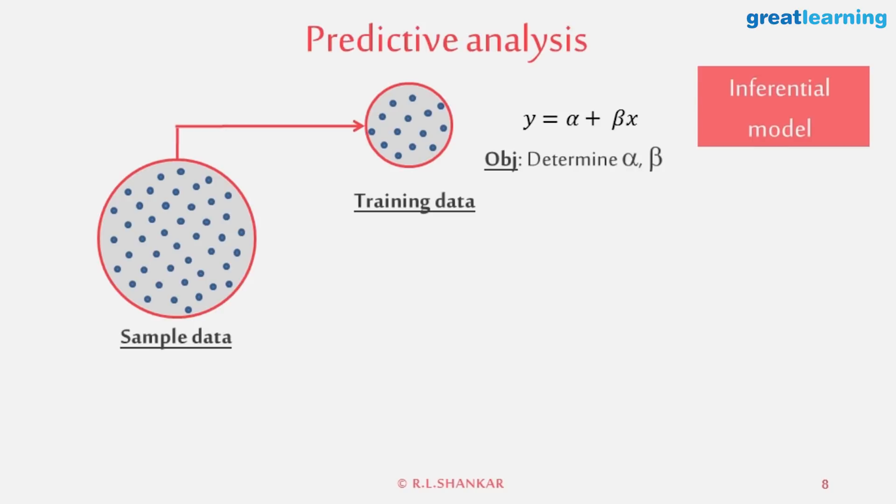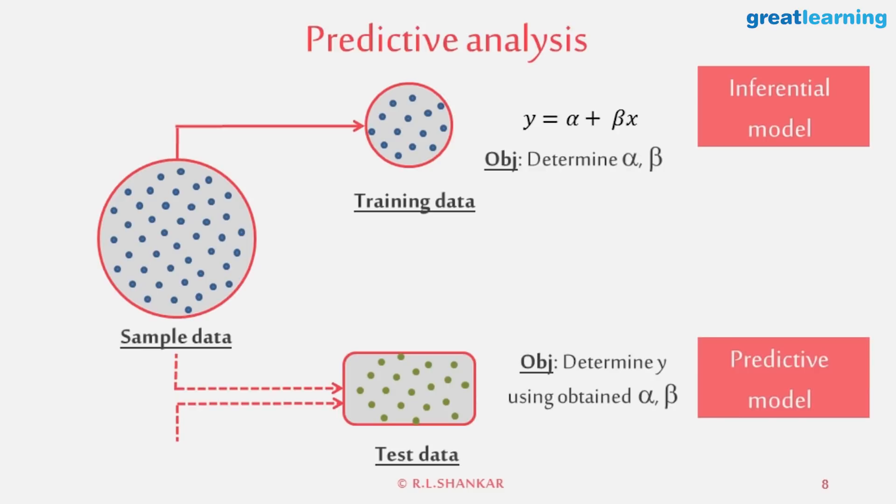How does this become a predictive model? You either take test data, which could come from the sample or from unknown data in future periods, and you apply the same model. You determine an alpha and beta, and you apply the same alpha and beta to determine what the Y is likely to be. And that is a predictive model.